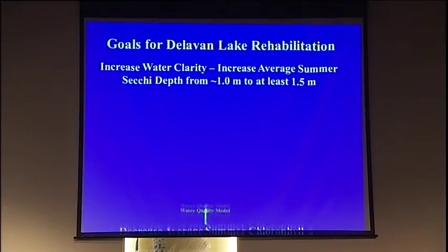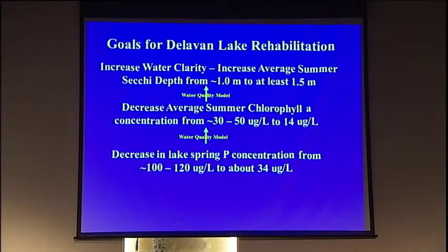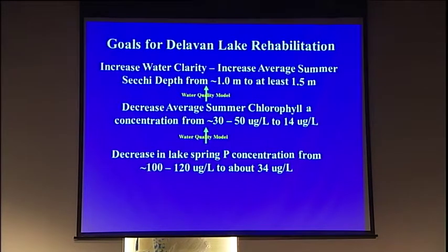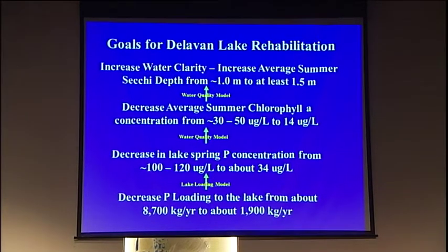To do that, we had to reduce the amount of algae in the lake — using a couple of models, we found we had to reduce chlorophyll from about 50 down to about 14. In order to do that, we had to bring the spring phosphorus concentration down from 120 down to 34. And in order to get that phosphorus concentration down, we had to reduce the phosphorus loading from 8,700 kilograms down to about 2,000. So this was going to be a massive rehabilitation — we had to reduce it by about 75%.